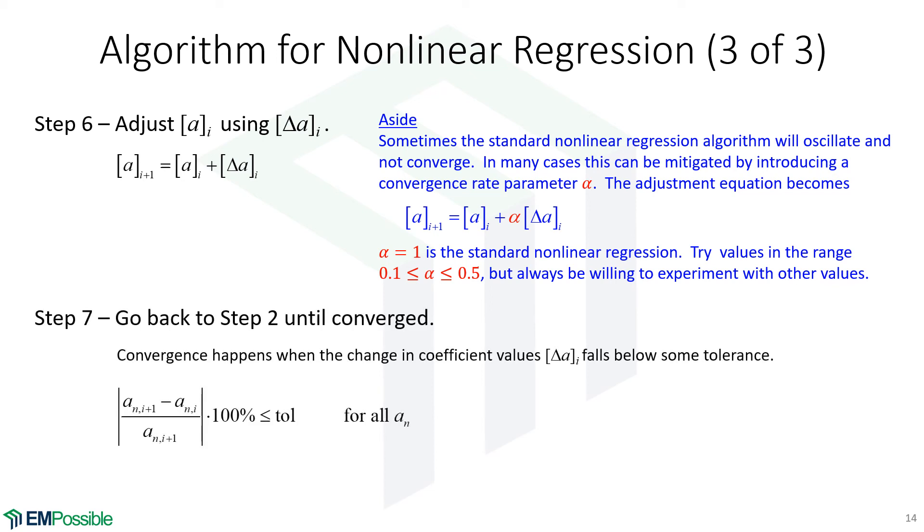We also need to know if we're converged. And so what I like to do is look at the difference between all of my curve fit parameters. And I'll normalize those to the curve fit parameters. That way I get sort of percent error. I'll look at the biggest one and make sure that that is still above some kind of tolerance to keep iterating. Once that falls below my tolerance, then the changes are small enough and the algorithm can end.